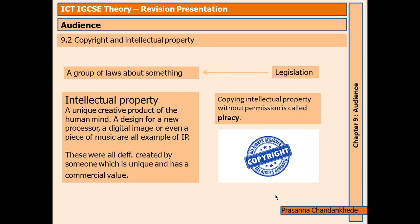Copyright and intellectual property. There are many legal constraints that apply to the use of ICT. We are now going to consider the necessity for copyright legislation — legislation being a group of laws about something. Intellectual property, or IP, is a unique creative product of the human mind. A design for a new processor, a digital image, or even a piece of music are all examples of intellectual property. These were all created by someone, are unique, and have a commercial value.